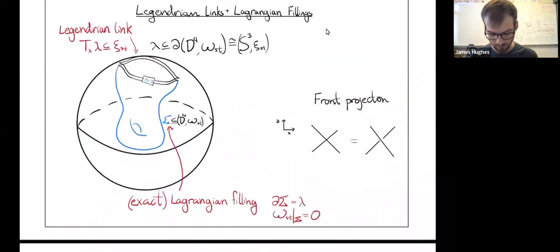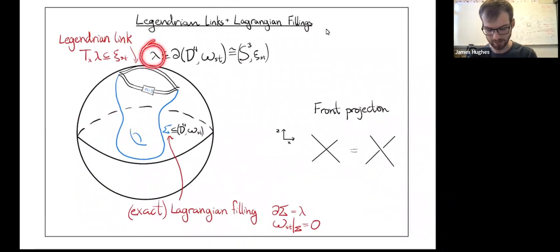This talk is a brief introduction to Legendrian weaves. The setup: we're given a Legendrian link lambda in the contact 3-sphere, and we want to say something about the Lagrangian surfaces in the symplectic four-ball whose boundary is this link. So we've got all these exact Lagrangian fillings of lambda.